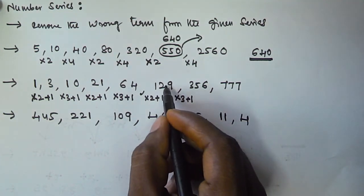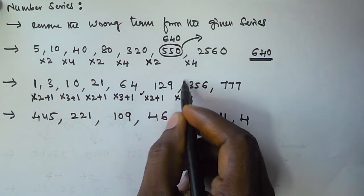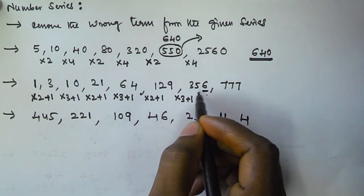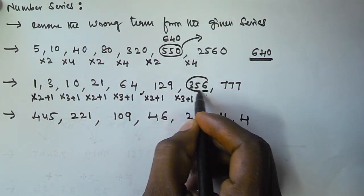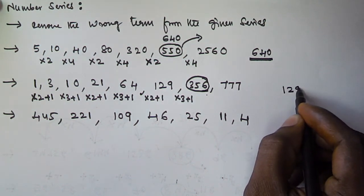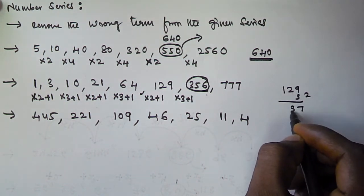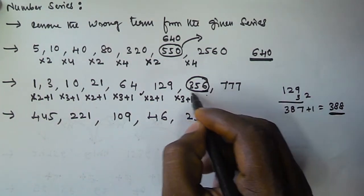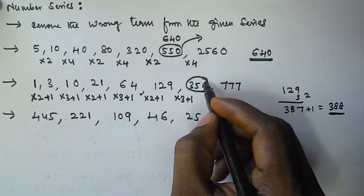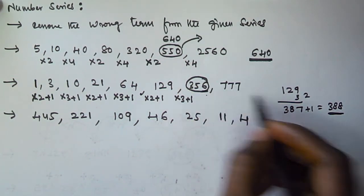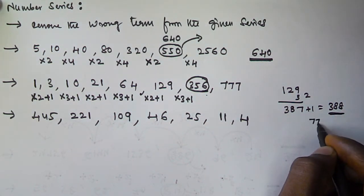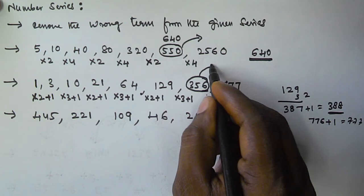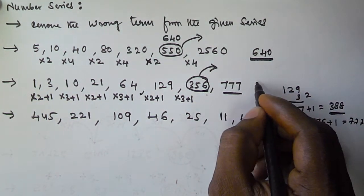The next one is x 3 + 1, so 129 x 3: the unit digit is 7, and 7 + 1 is 8, so we should get a unit digit of 8. But here we got 356. So 356 is the wrong term. The right term is 129 x 3 = 387, plus 1 = 388. Checking the next term: 388 x 2 + 1 = 777. So the wrong term is 356 and we substitute it with 388.